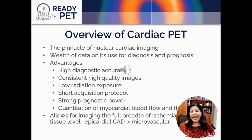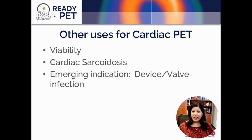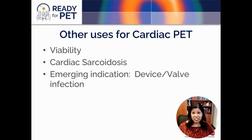It really allows for imaging the full breadth of ischemia for our patients — from the epicardial level, where we can now distinguish focal versus diffuse disease, all the way down to the microvasculature and the ability to diagnose coronary microvascular disease. Other uses for cardiac PET include viability, cardiac sarcoidosis, and emerging indications for device and valve infection.